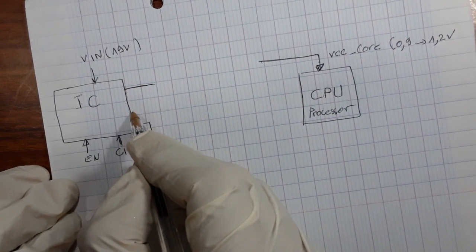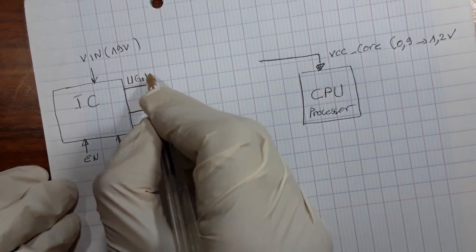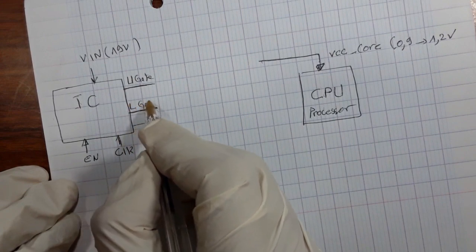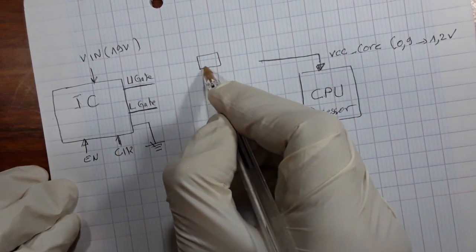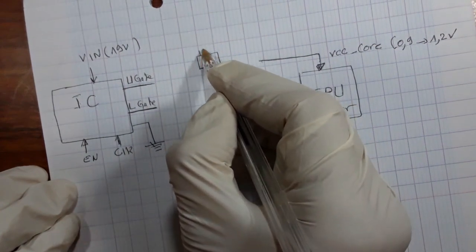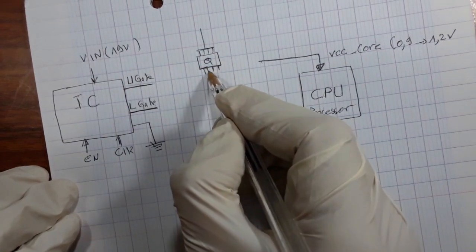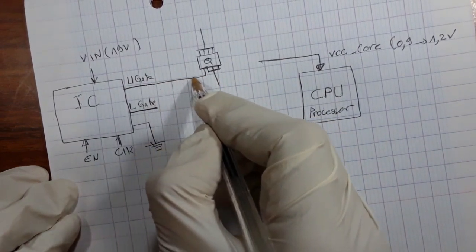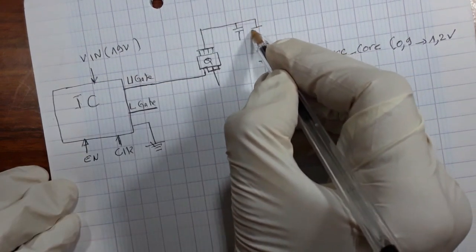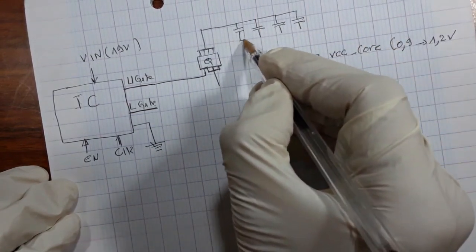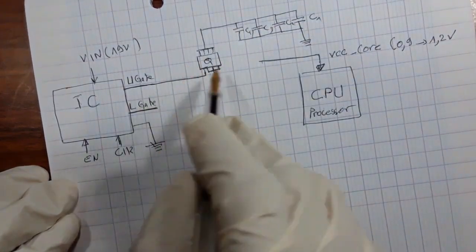This is the first control signal and this is the second control signal. The first goes to the upper gate and the second goes to the lower gate — meaning the gate of the MOSFET. This is MOSFET Q1. We have here drain, and here we have source — these three are source — and here we have the gate. We also have PF capacitors: C1, C2, C3, and C4.